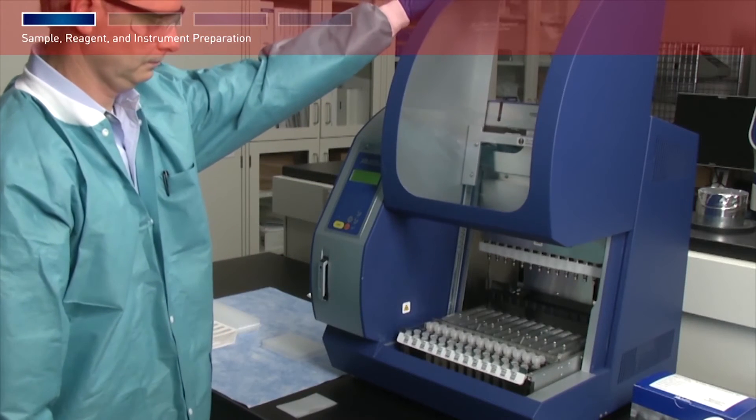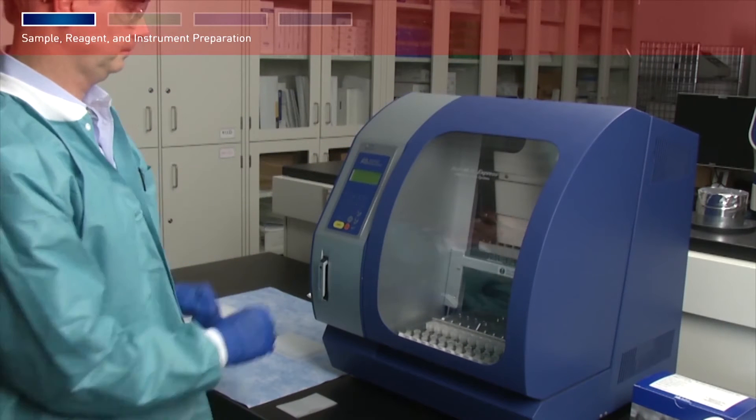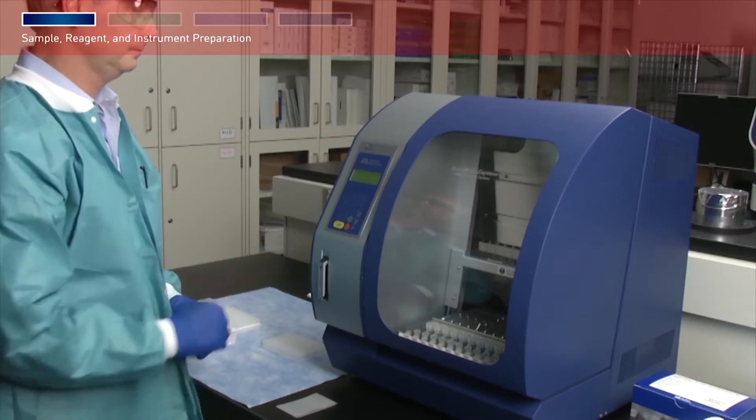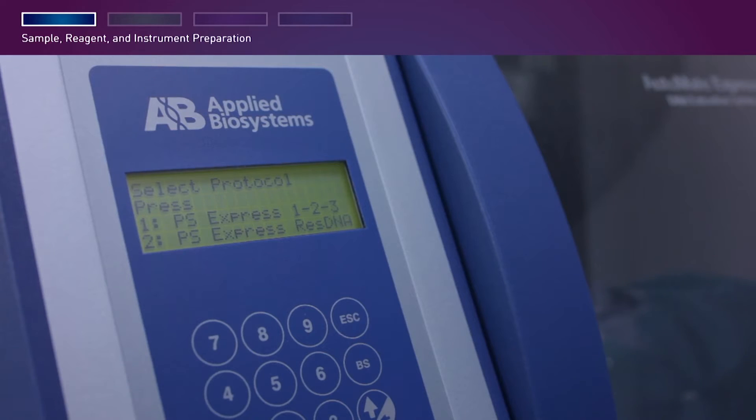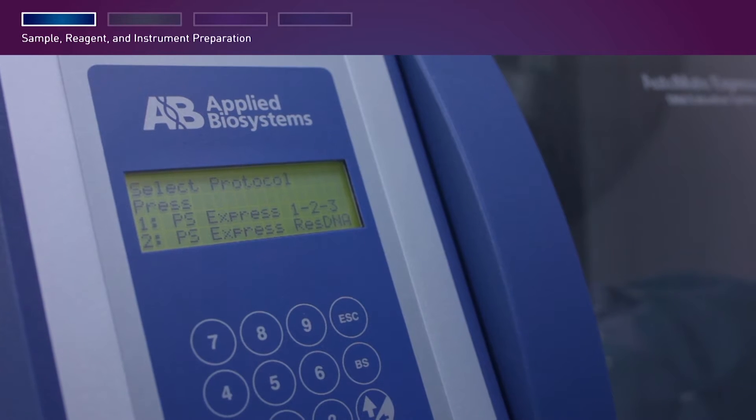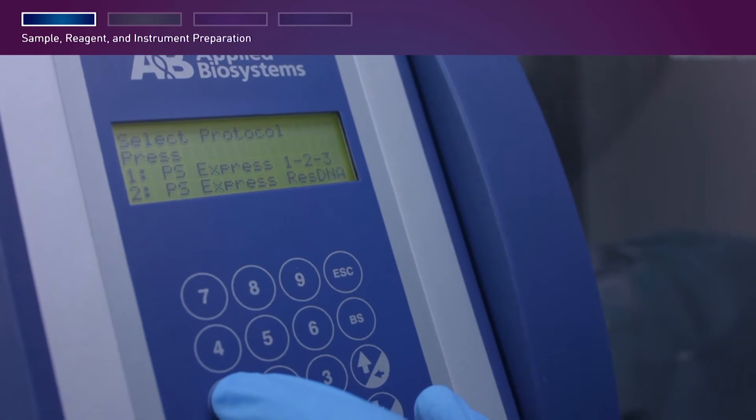Close the instrument door and press Enter. The system will then walk you through the protocol setup. Press 1 to select the PrepSeek 123 option for mycoplasma, MMV, or vesivirus. Press 2 to select the PrepSeek option for residual DNA.